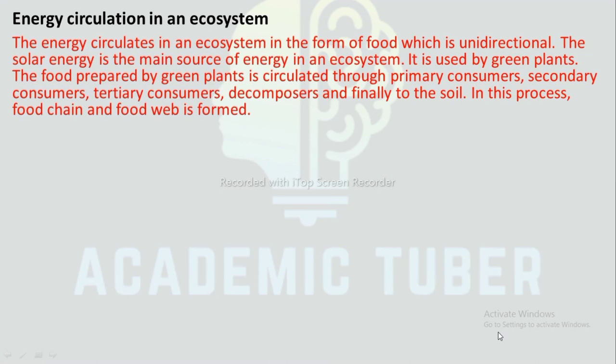Tertiary consumers in the pond ecosystem include snakes. Decomposers include microorganisms like bacteria, fungi, and molds. Energy circulation in an ecosystem: Energy circulates in an ecosystem in the form of food, which is unidirectional. Solar energy is the main source; it is used by green plants. The food prepared by green plants circulates through primary consumers, secondary consumers, tertiary consumers, decomposers, and finally to the soil, forming food chains and food webs.